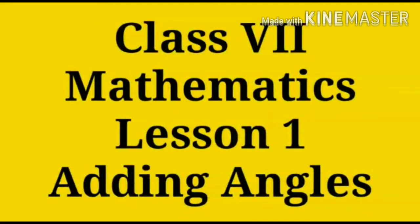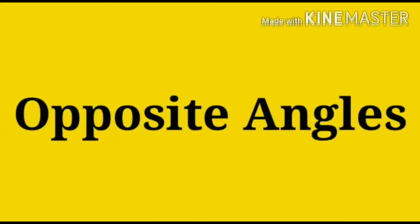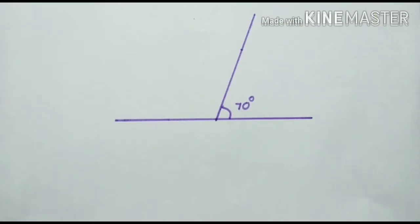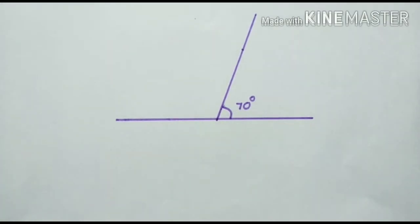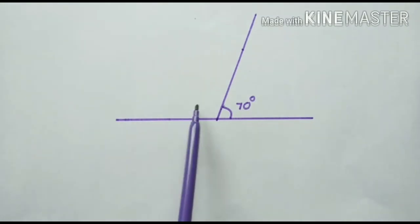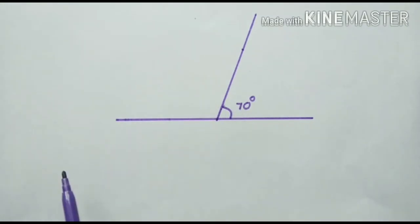Welcome back to our math class. Our next topic is opposite angles. Now look into these angles. Here we have two angles on a straight line. In the previous section we studied how to find unknown angles on a straight line. We know that the sum of angles on a straight line gives 180 degrees.